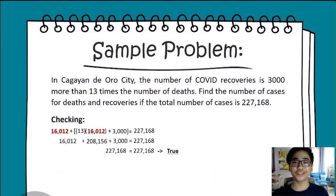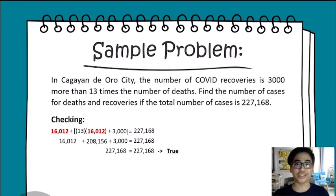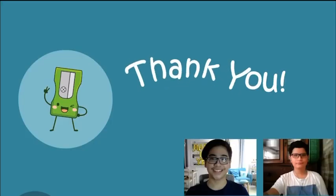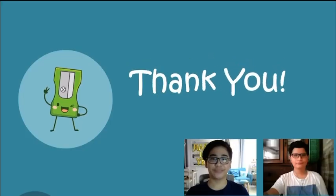In conclusion, there are a total of 16,012 death cases and 211,156 recoveries from COVID-19. Hope you learned something today! Bye!